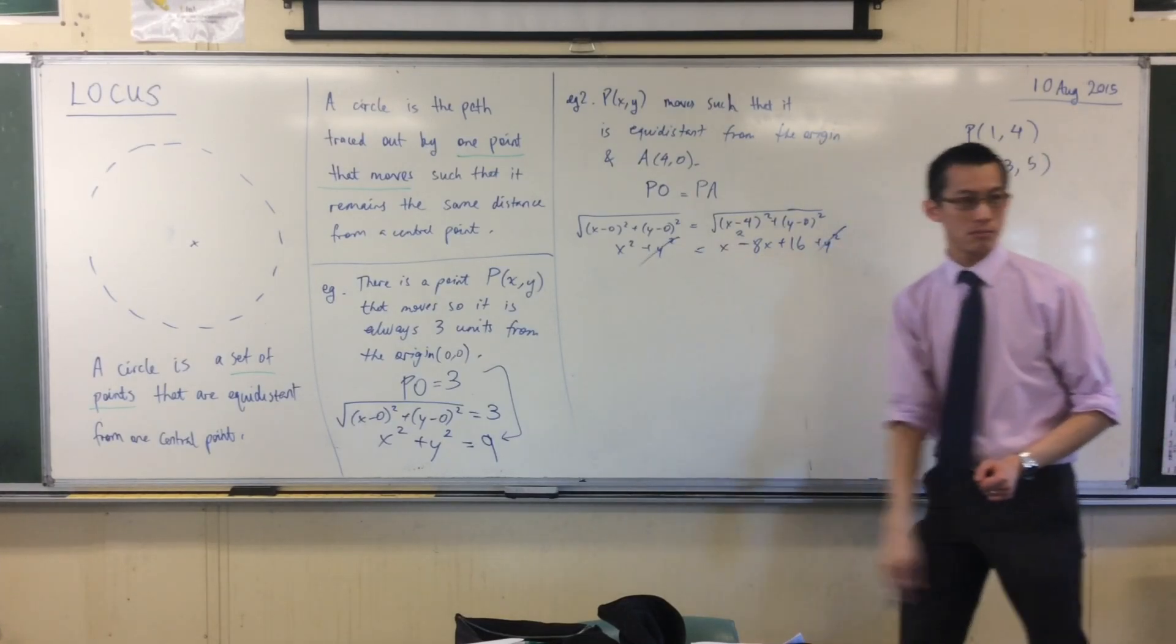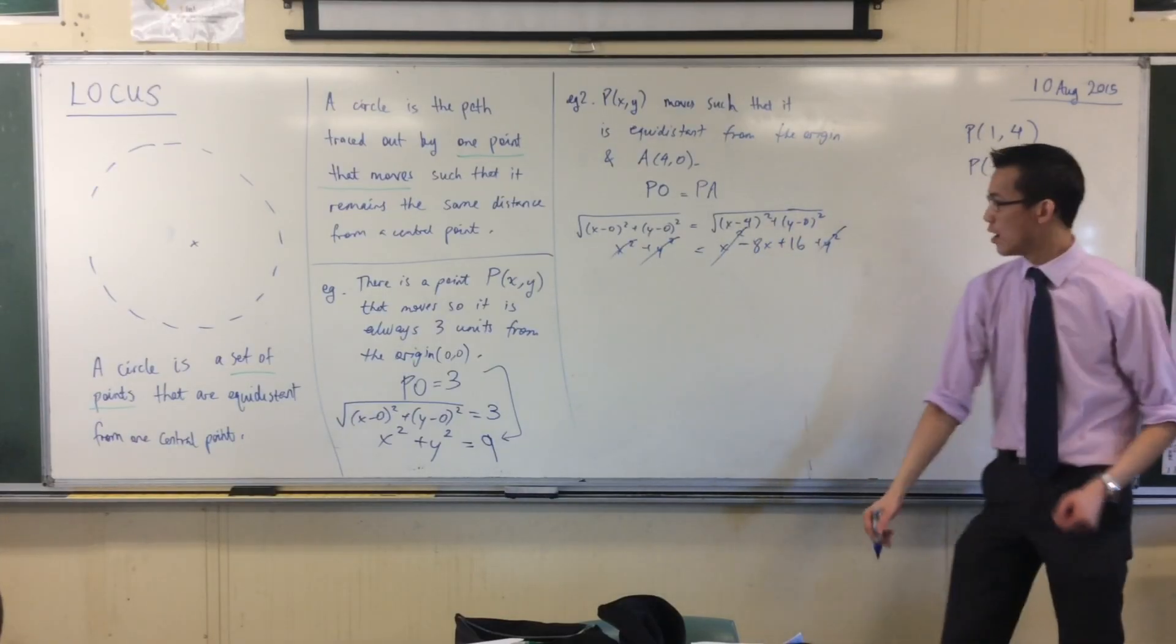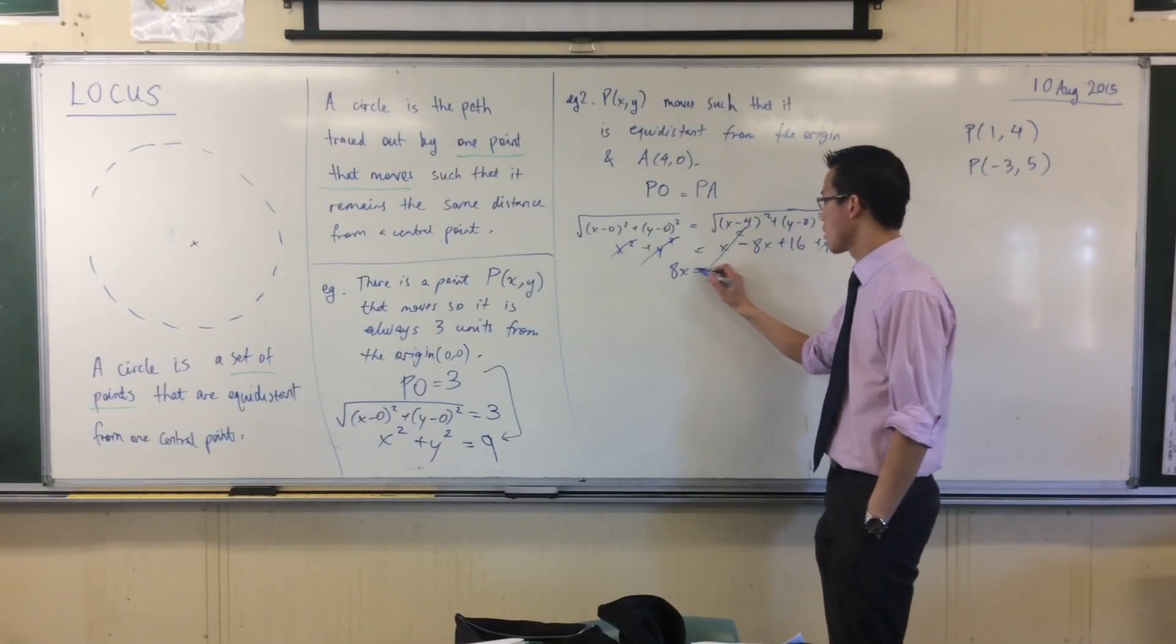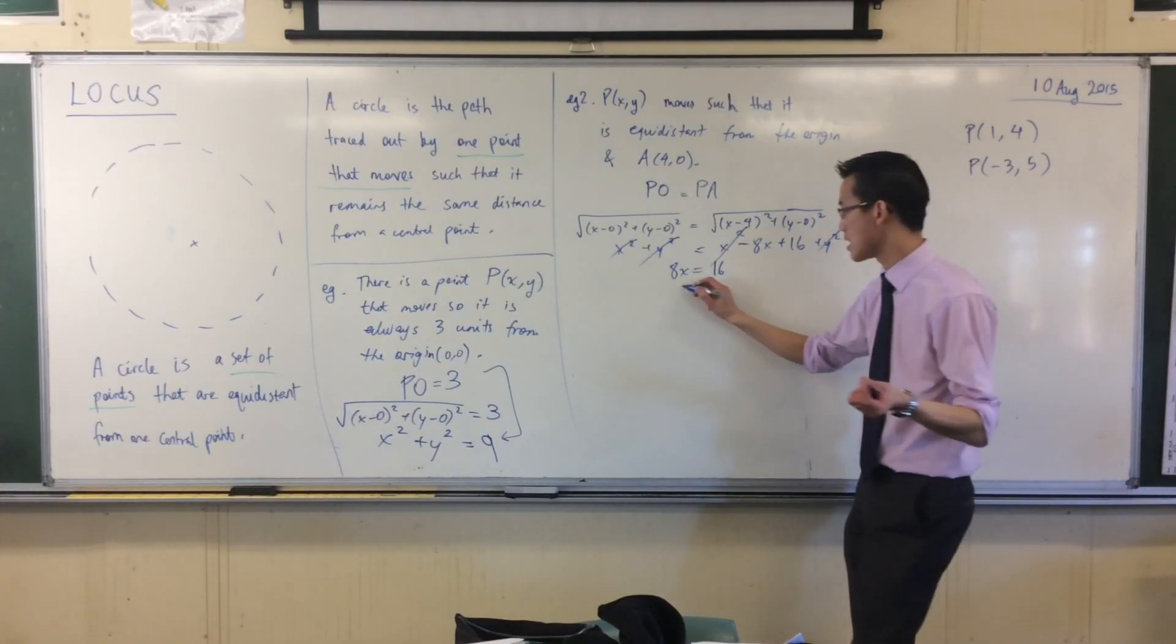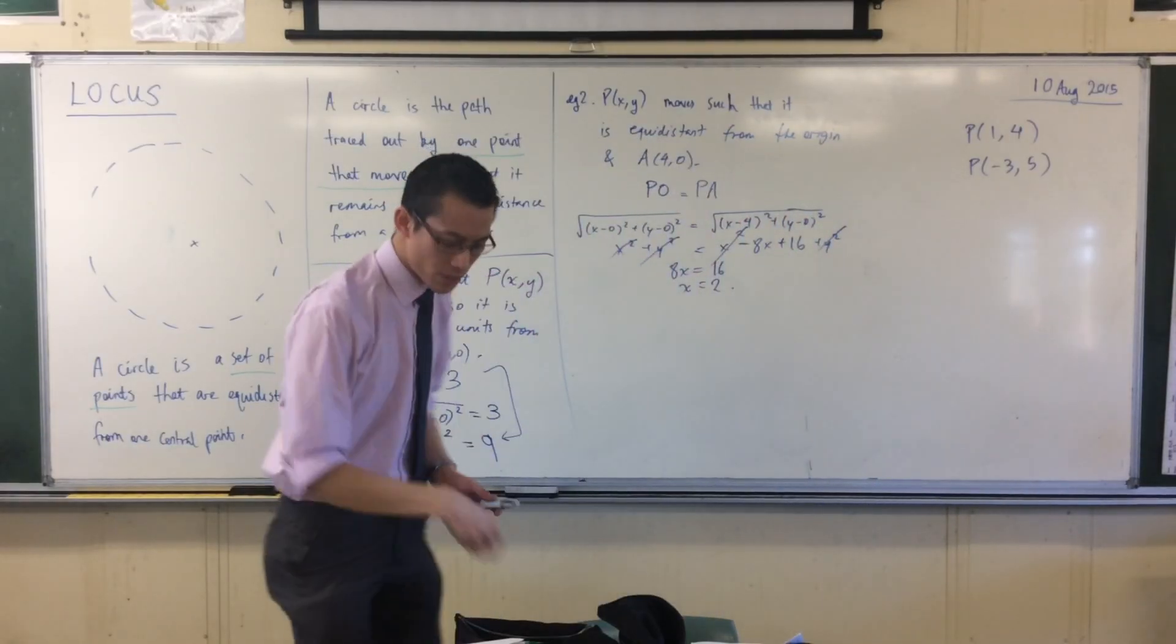Cancel, cancel. What else cancels? x squared. The x squareds cancel. What am I left with? I've got 8x, let's kick him over the other side, equals 16, so that means x equals 2. Now, did you visualize that beforehand? Let's quickly draw this guy.